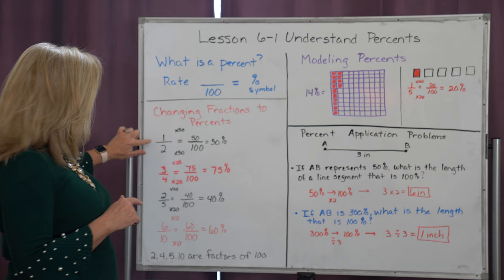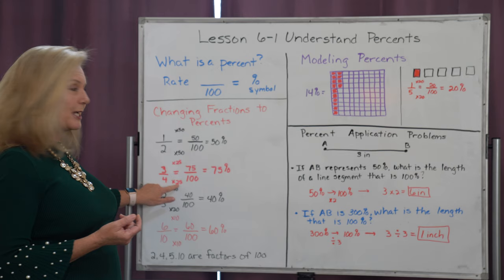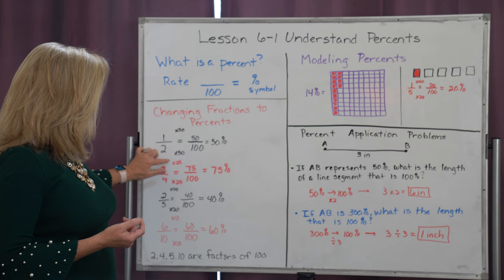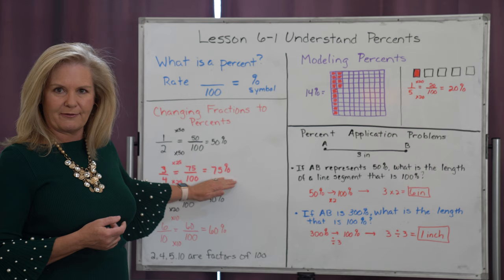Now three-fourths is also equally easy to do because four can go into a hundred by multiplying by twenty-five. But if you do it on the bottom, you do it on the top. So three times twenty-five is seventy-five. All I do is take that numerator of seventy-five, attach that percent symbol to the end. So three-fourths is the same as seventy-five percent. We can do that with fifths and tenths just as easily.